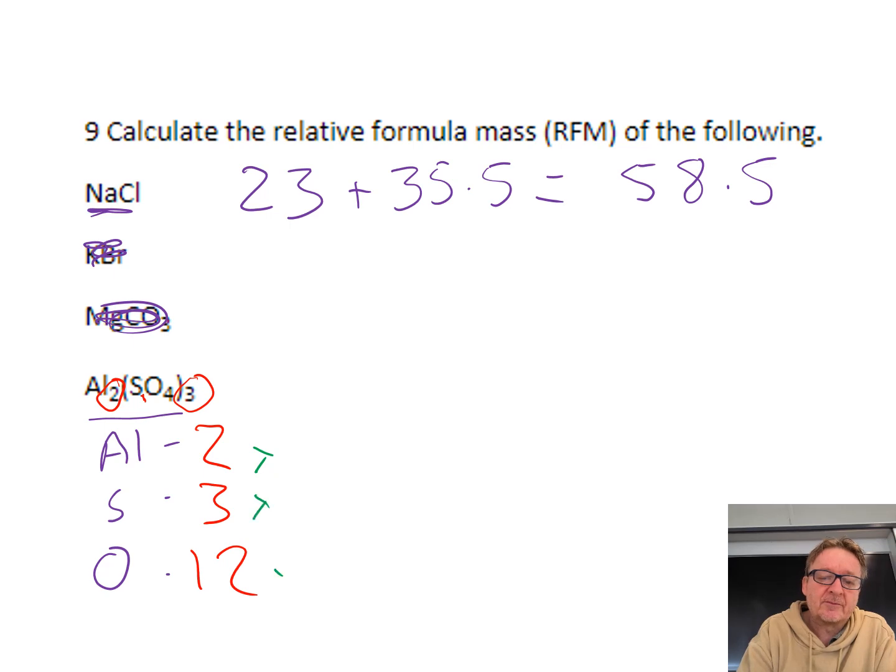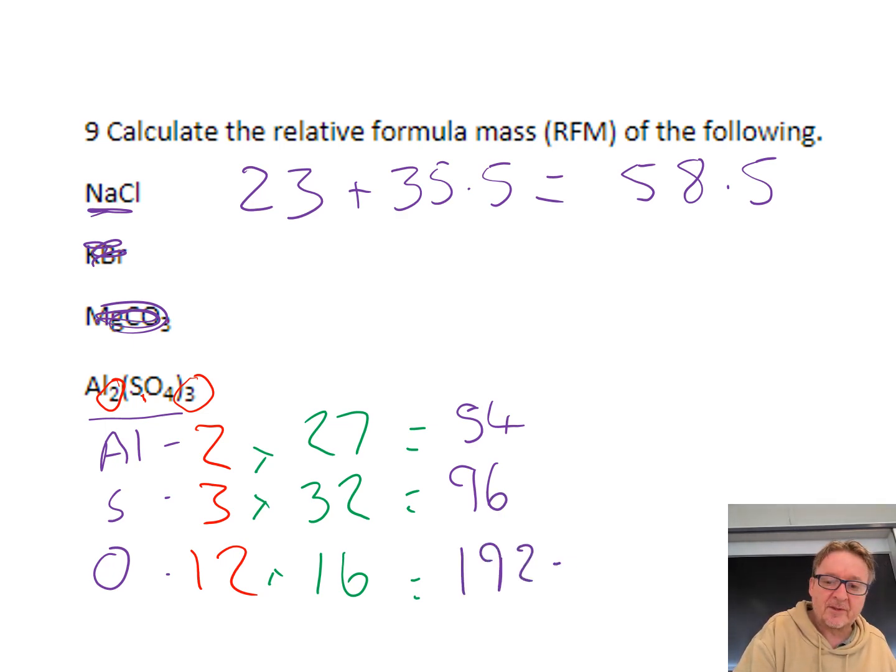Then I multiply by the mass number of each one. The mass of aluminium is 27, sulfur is 32, and oxygen is 16. 2 times 27 is 54, 3 times 32 is 96, 12 times 16 is 192. Add them all together and you get 342.